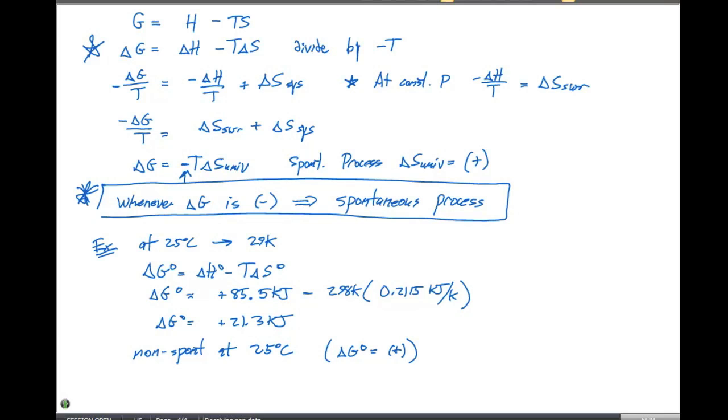Is there a particular instance where we could make this delta G naught negative? If we look at the math right here, we have a positive term for our delta H, and our delta S is also positive. So if this term right here can be made negative, the more negative this term is, the more likely to be spontaneous.